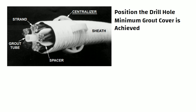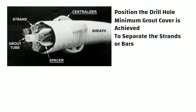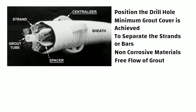For multiple element tendons, spacers are used to separate the strands or bars of the tendons so that each element is adequately bonded to the anchor grout. Spacers and centralizers should be made of non-corrosive materials and be designed to permit free flow of grout. Spacer or centralizer units are placed at regular intervals, typically 3 meters, along the anchor bond zone.